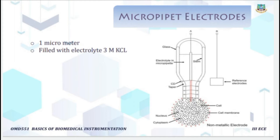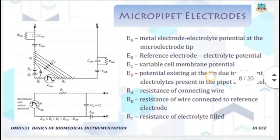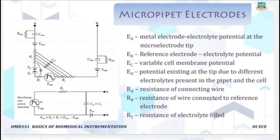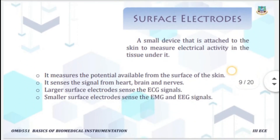The other end of the metal wire is mounted to a rigid support and the resting end is placed on the cell. This is the equivalent circuit of the micro pipette electrode.